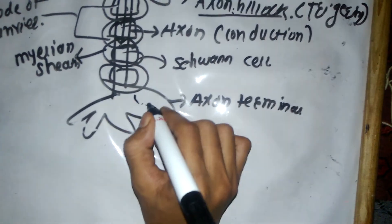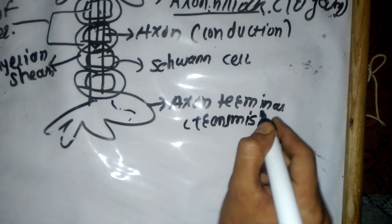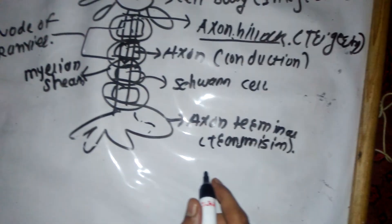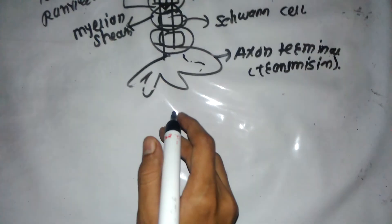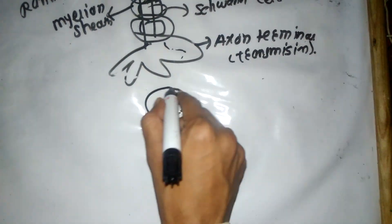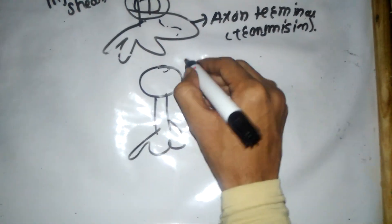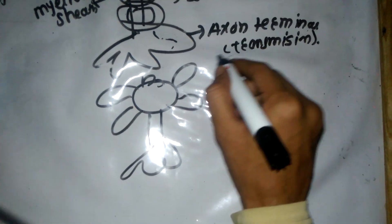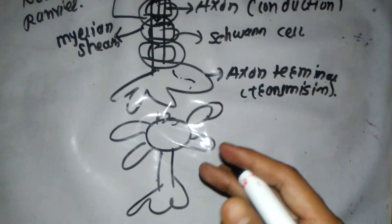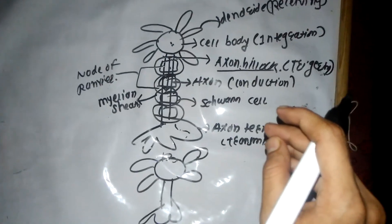The signal then goes into the axon terminal, and transmission of the signal takes place in the axon terminal. You may ask how transmission takes place at the axon terminal — here is another neuron whose cell body is present, with its own axon and axon terminal. The dendrites of this next neuron receive the transmitted signal, and the same process repeats again and again.